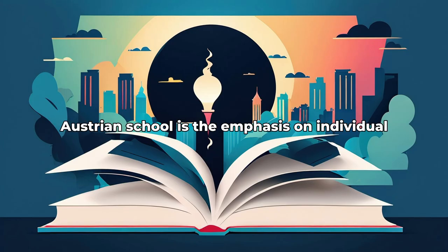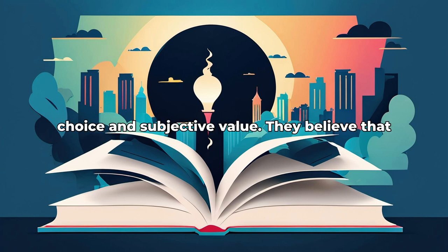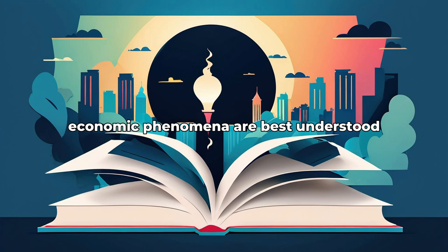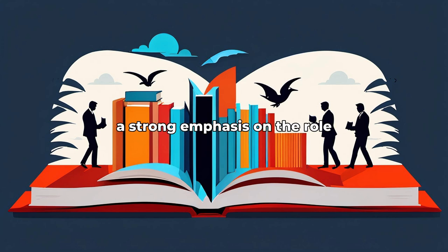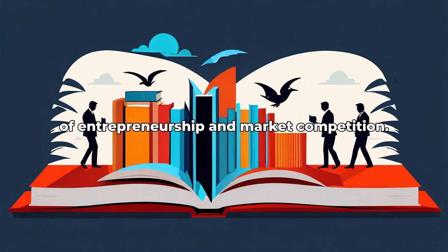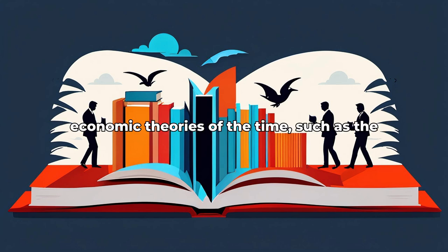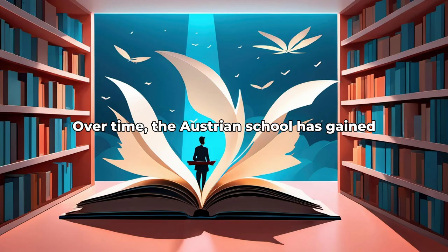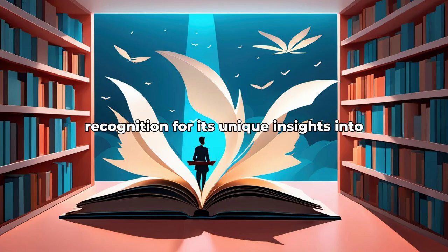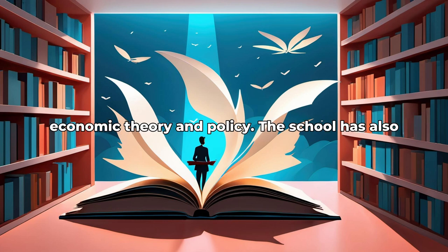One of the central tenets of the Austrian school is the emphasis on individual choice and subjective value. They believe that economic phenomena are best understood through the actions of individuals. The Austrian school also places a strong emphasis on the role of entrepreneurship and market competition. These ideas stood in contrast to the dominant economic theories of the time, such as the classical and neoclassical schools. Over time, the Austrian school has gained recognition for its unique insights into economic theory and policy.